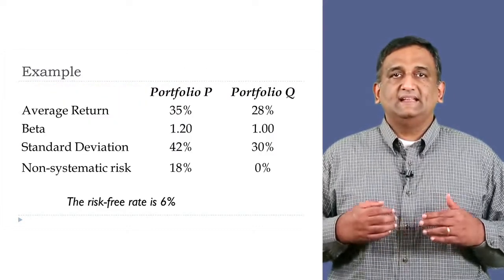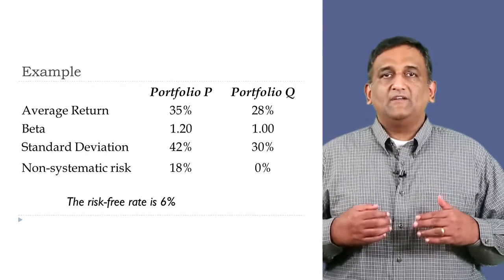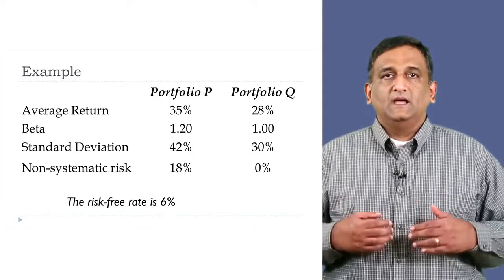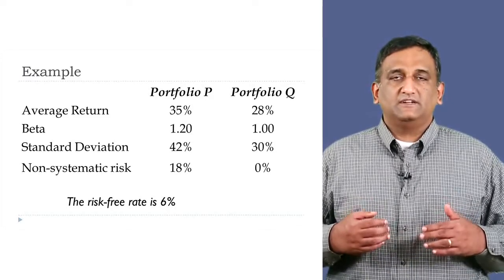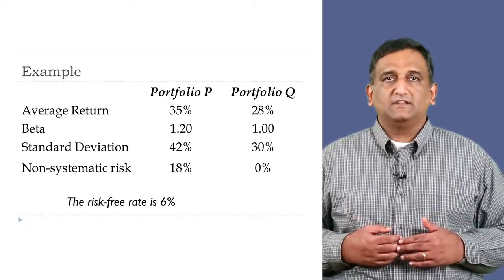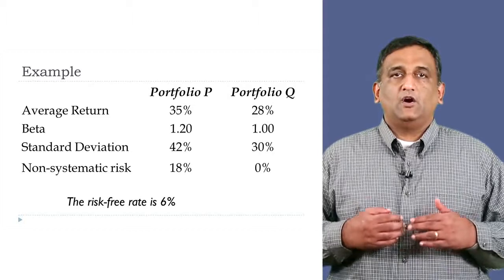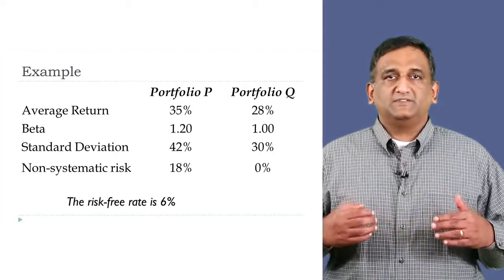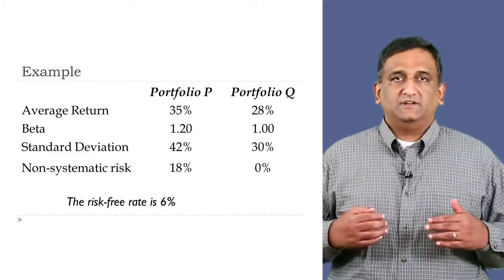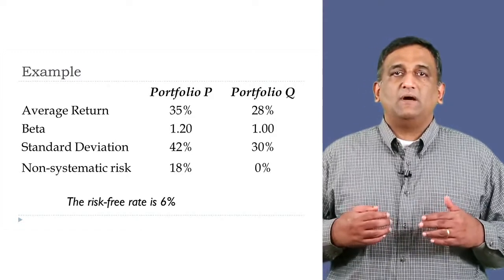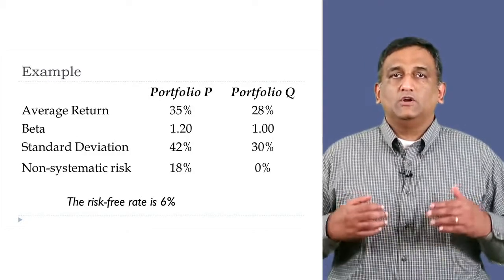Let's look at an example that illustrates the use of these four risk-adjusted performance measures. We have two portfolios, P and Q. P has an average return of 35%, a beta of 1.2, standard deviation of returns of 42%, and diversifiable risk of 18%. Q has an average return of 28%, a beta of 1, standard deviation of returns of 30%, and diversifiable risk of 0%. The risk-free rate is 6%. We can say that Q is the market portfolio. Why is that? It has a beta of 1 and 0 diversifiable risk.